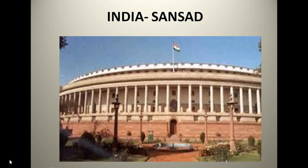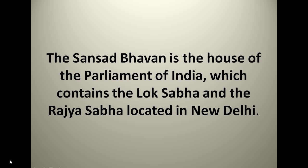The very first picture is of India and in India the parliament is known as Sansad. The Sansad Bhavan, means the parliament house, is the house of the parliament of India which contains the Lok Sabha and the Rajya Sabha, located in New Delhi. The parliament has two houses — Lok Sabha, the lower house, and the Rajya Sabha, also known as the upper house.